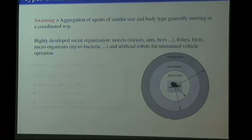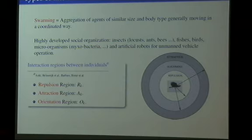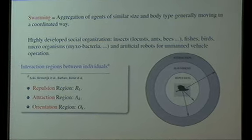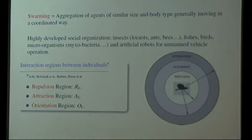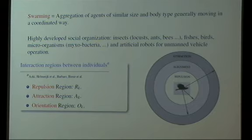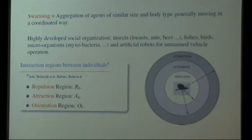Most of the models I know — I am talking about the works of others — most of these models include three basic effects. There are plenty of other effects, but these three basic effects are more or less always present. Essentially, you assume that these individuals are social. What do I mean by social? That they would like to meet with others. So there is some attraction effect that you want to include.